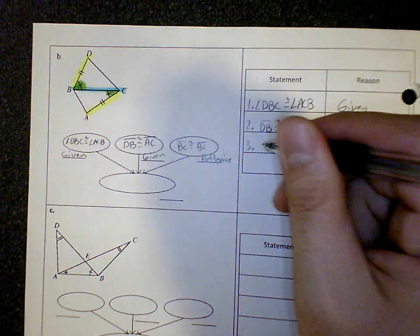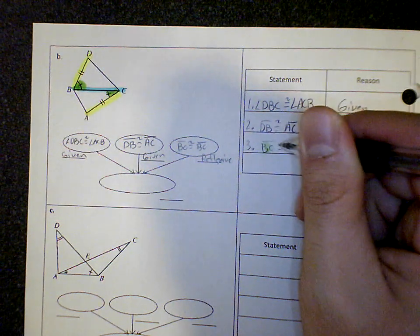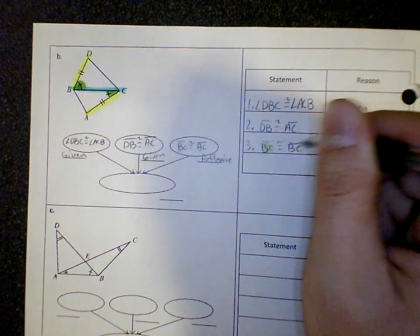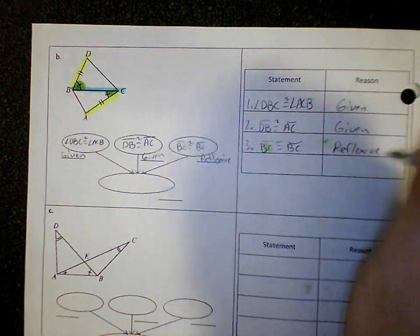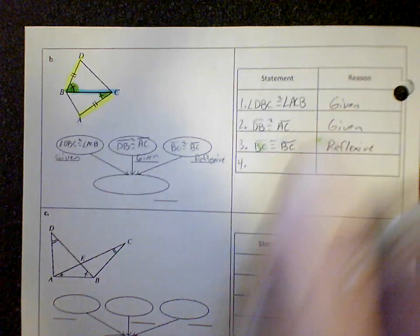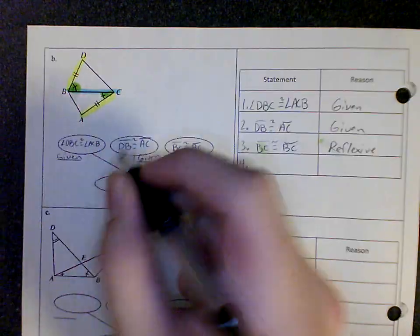So my third step in my two column proof is BC is congruent to BC, and the reason is reflexive.